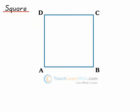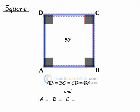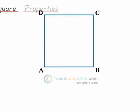A square is a parallelogram having all sides equal and each angle measuring 90 degrees. Here AB = BC = CD = DA, and angle A = angle B = angle C = angle D = 90°.